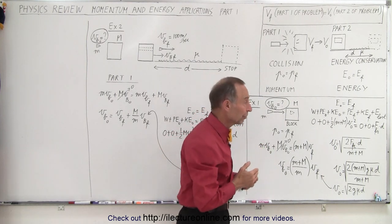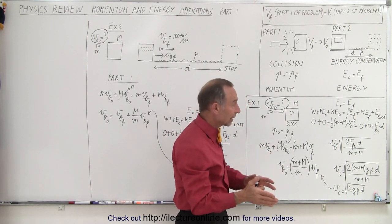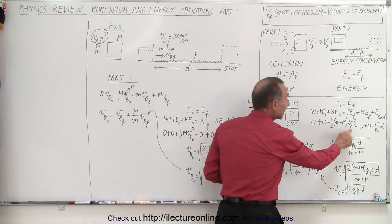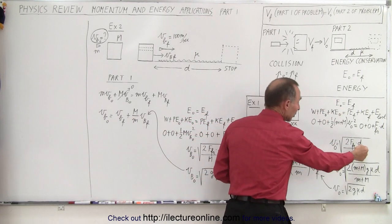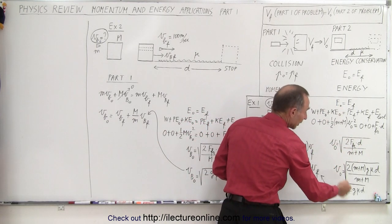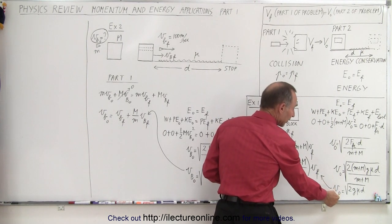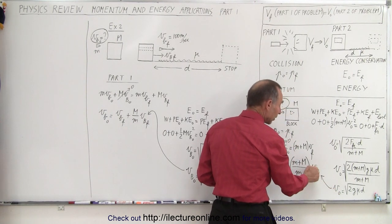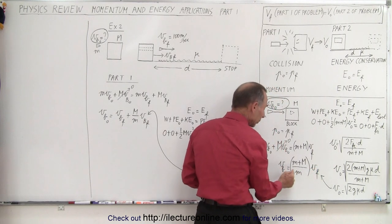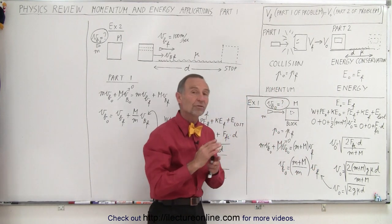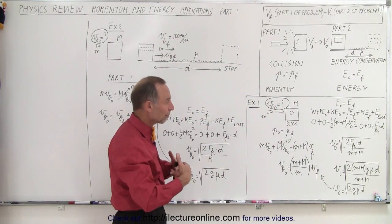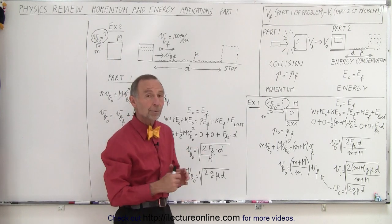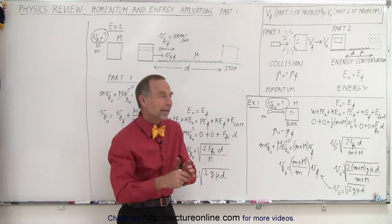Presumably they give us the coefficient of friction and the distance traveled, so from that we can find the initial velocity of part two. Once we have the initial velocity of part two, that becomes the final velocity of part one. We plug it in and then solve for the initial velocity of the bullet. That is the process for this type of problem where we combine momentum and energy.